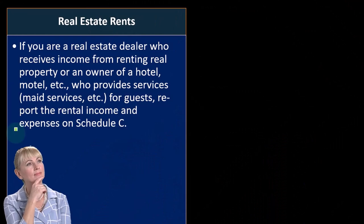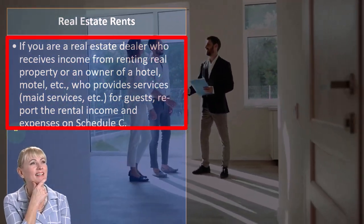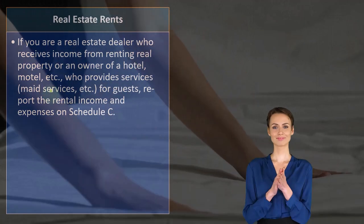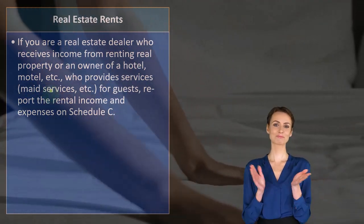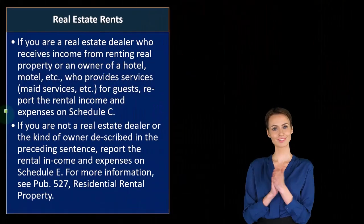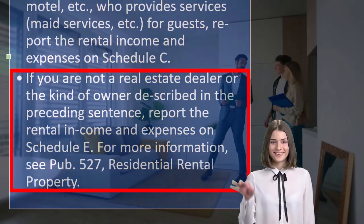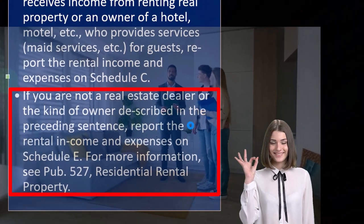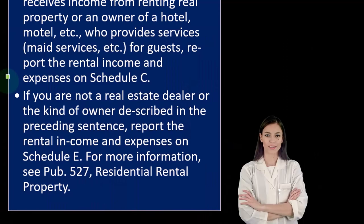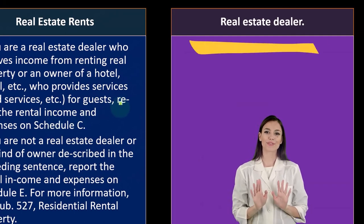So once again, if you are a real estate dealer who receives income from renting real property, or an owner of a hotel, motel, etc., who provides services like maid services — that's one of the defining characteristics, that you're actively involved — report the rental income and expenses on Schedule C rather than Schedule E. If you are not a real estate dealer or the kind of owner described in the preceding sentence, report rental income and expenses on Schedule E. For more information, see Publication 527, Residential Rental Property.